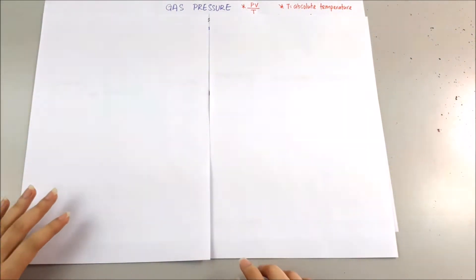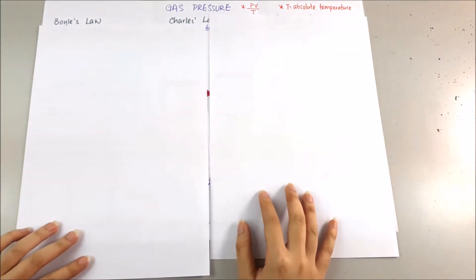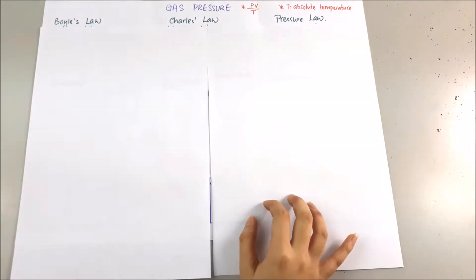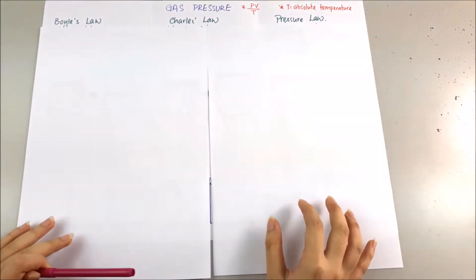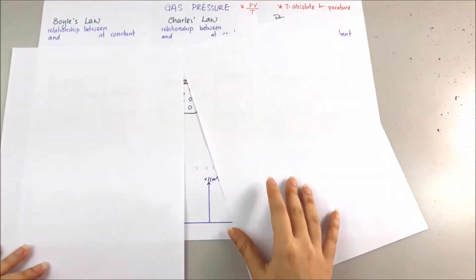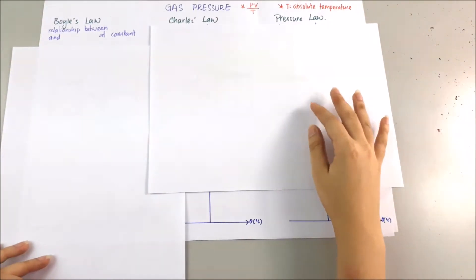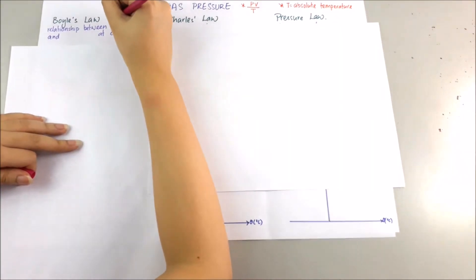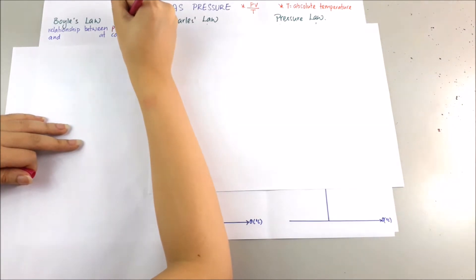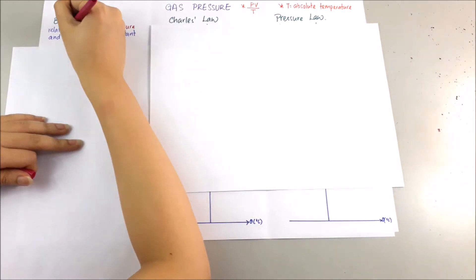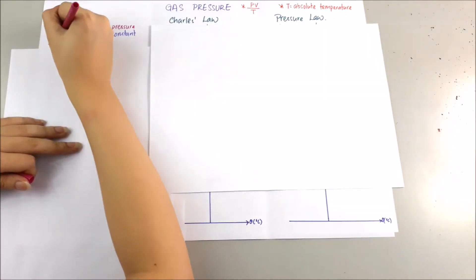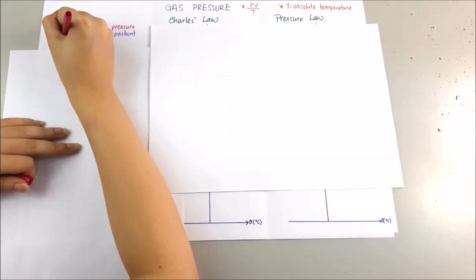There are three types of gas laws. The first one is Boyle's Law, Charles' Law, and Pressure Law. So let's just start with Boyle's Law. Boyle's Law is the relationship between pressure and volume at constant temperature.